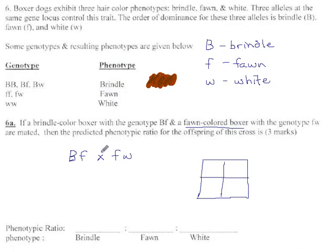So if mom passes on either big B or f, and if dad passes on either f or w, then the offspring could be, here we get BF, here we get BW, here we get FF, and here we get FW.